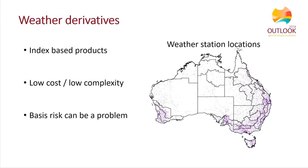Weather derivatives protect against climate or weather risk and are a bit like making bets on the weather. They can be based on a single variable like rainfall or temperature and are typically priced and managed using weather station data. The derivative pays out if, for example, rainfall is below some pre-specified amount over a pre-specified period. The advantage is that they're relatively low cost and simple to operate. The disadvantage is that they don't provide complete protection — if you're located far from a weather station, the payout isn't based on what happens to your profit, only on that weather variable, and the two aren't necessarily perfectly correlated.